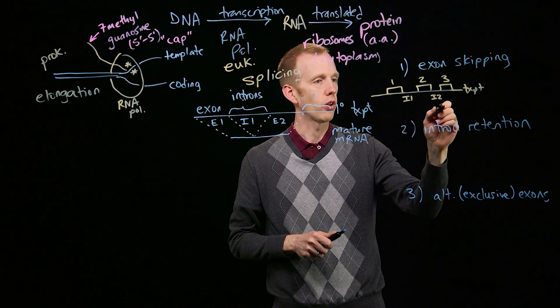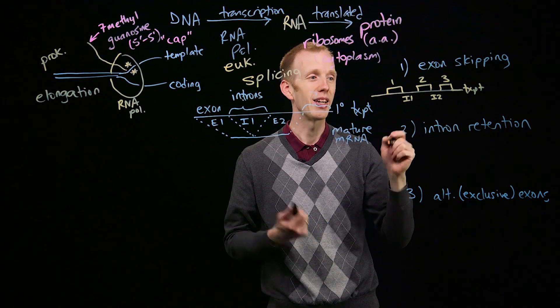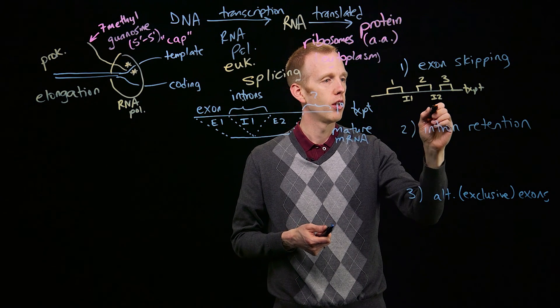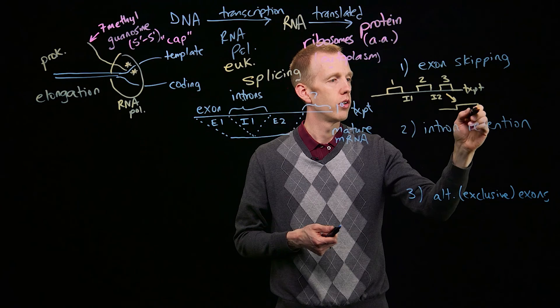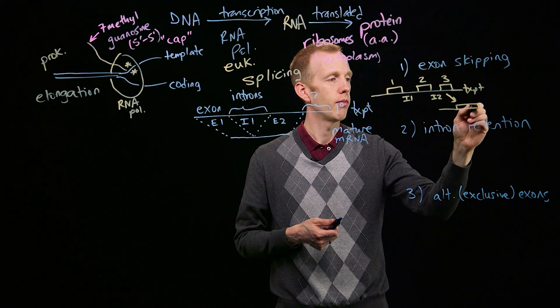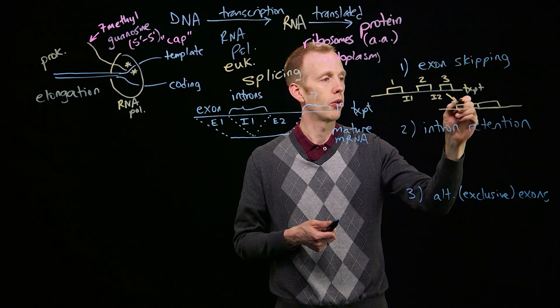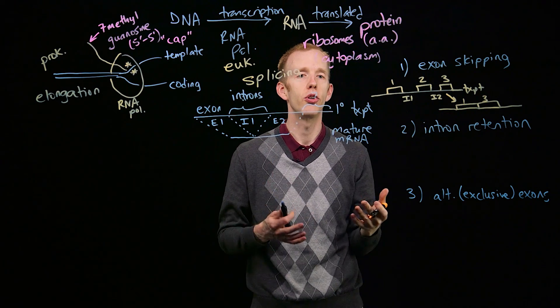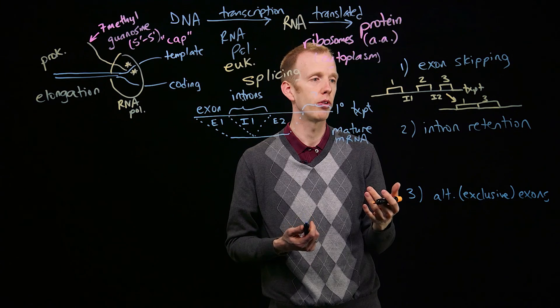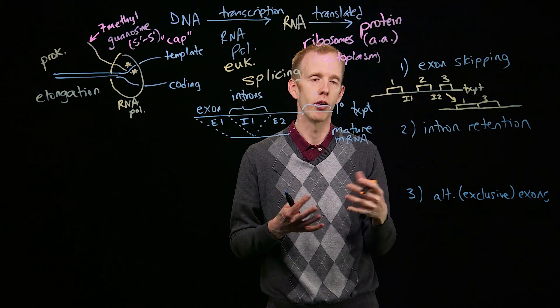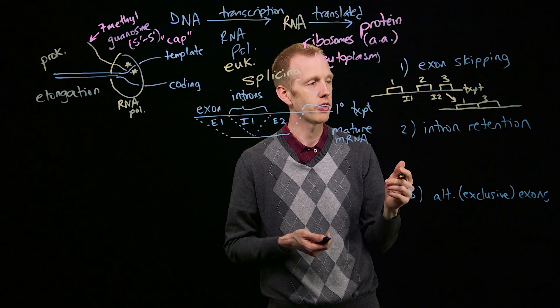exon skipping would look like maybe exon 2 gets removed, along with the two introns. So then we'd have a mature messenger RNA molecule that has exons 1 and 3, exon 2 has been skipped, but both of the introns have been removed. And again, that process of removal of introns, and sometimes exons, is called splicing.